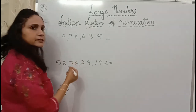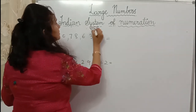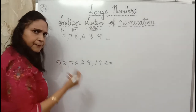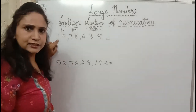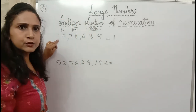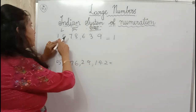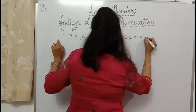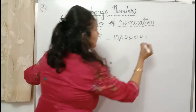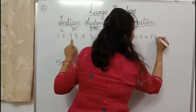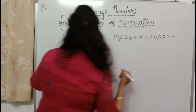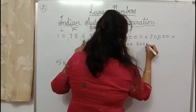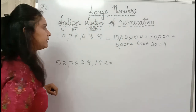Now let's see expansion in numbers. It is at ten lakhs place — so we write 1 followed by six zeros: 10,00,000. Zero we don't expand. Seven is at ten thousands — 7 followed by four zeros: 70,000. Eight at thousands — 8,000. Six at hundreds — 600. Then three at tens — 30. And nine at ones — 9. This way we expand in numbers.